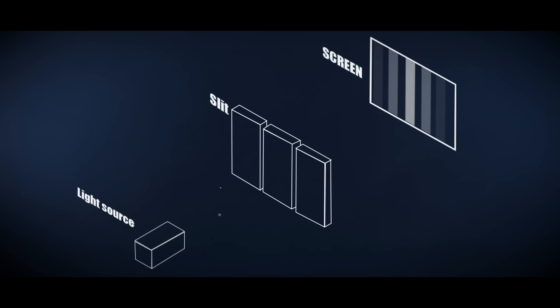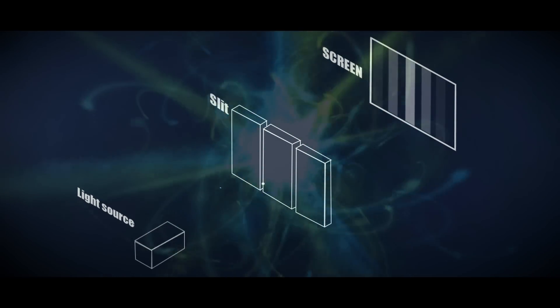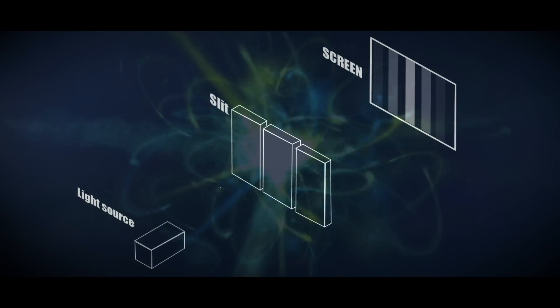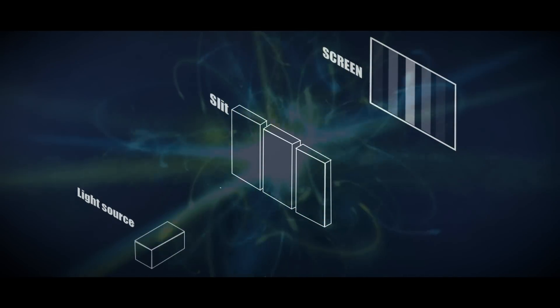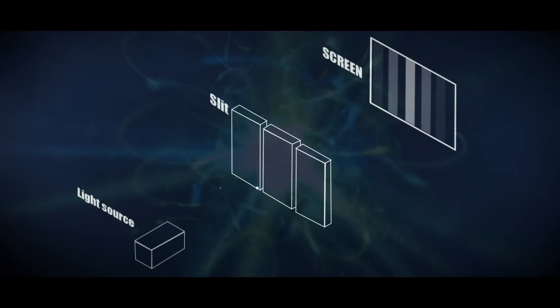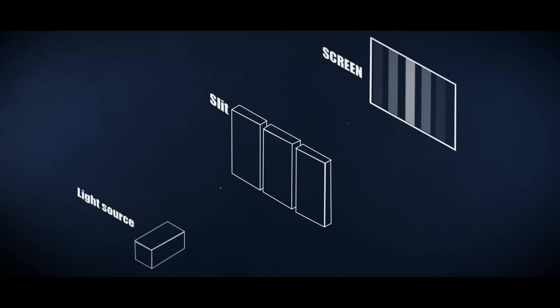For our purposes, photons exist in different places at the same time before they reach the screen, specifically because they are not being directly observed. Until it reaches the screen, the photon's behavior is expressed by its wave function.